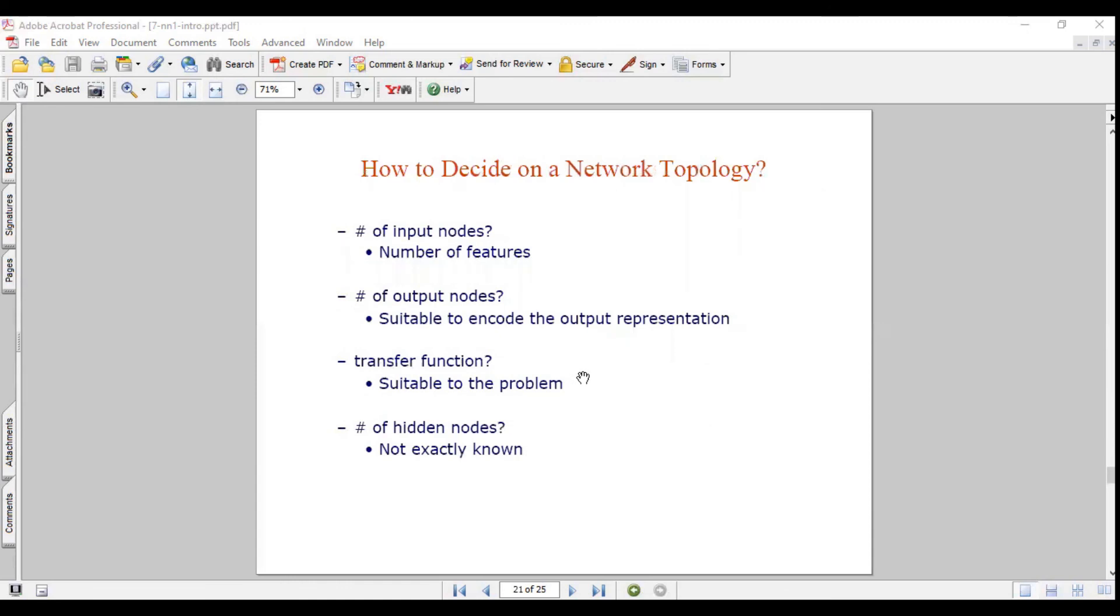How do you decide on network topology? There is number of input nodes, output nodes, transfer function, and hidden nodes. Number of input nodes is the number of features. Output nodes should be suitable to encode the output representation. Transfer function or activation function is suitable to the problem. Number of hidden nodes is not exactly known. If you are not aware of it, you can experiment. Number of hidden nodes can be varied.